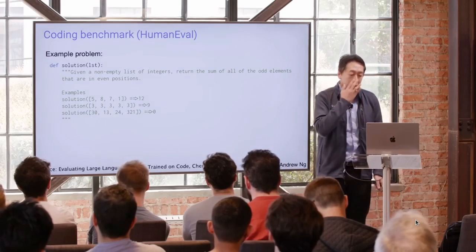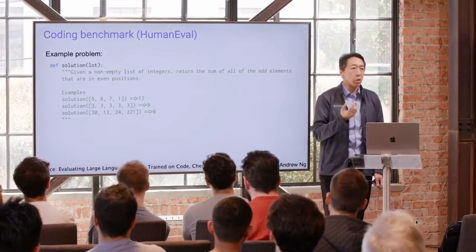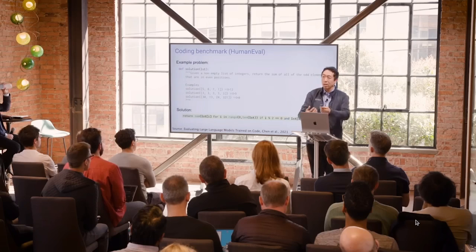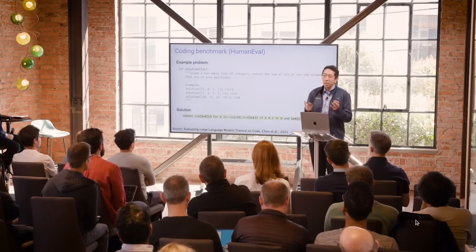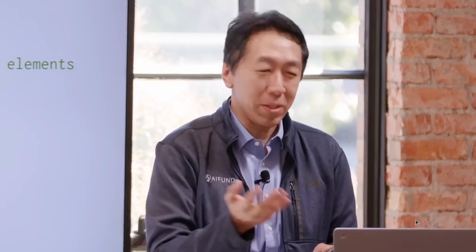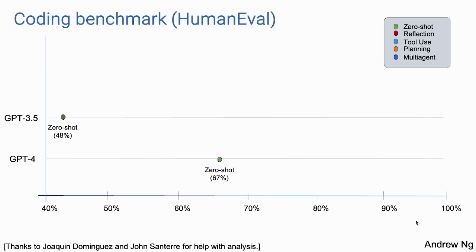My team analyzed some data using a coding benchmark called the Human Eval benchmark released by OpenAI. This has coding problems like: given a non-empty list of integers, return the sum of all the odd elements at even positions. Today, a lot of us use zero-shot prompting — we tell the AI to write the code and have it run on the first pass. It turns out GPT-3.5 zero-shot gets it 48% right, GPT-4 way better at 67% right. But if you take an agentic workflow and wrap it around GPT-3.5, it actually does better than even GPT-4.